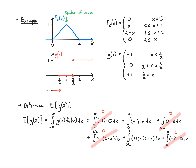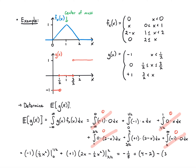Working out the two remaining integrals: the first is minus one times one half x² evaluated from zero to one half, giving minus one eighth. The second is plus one times (2x minus one half x²) evaluated from three halves to two, giving plus four minus two minus three plus nine eighths. Combining everything gives zero. This makes sense because both g and the PDF are symmetric about one, so g has average value zero.